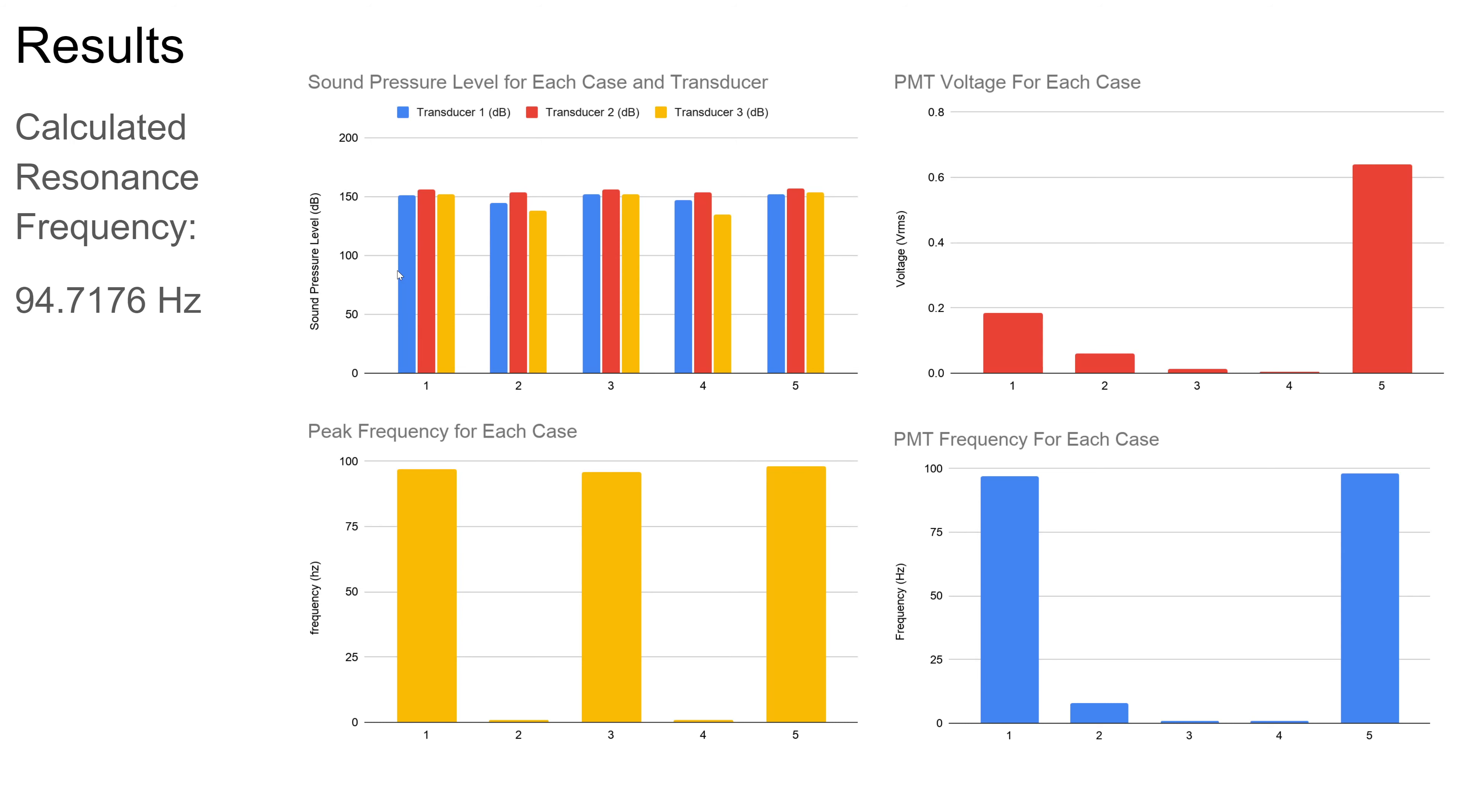These resonant non-resonant cases also correspond to a drop in sound pressure level at the third pressure transducer, which is the highest one on the tube as seen in the first graph.